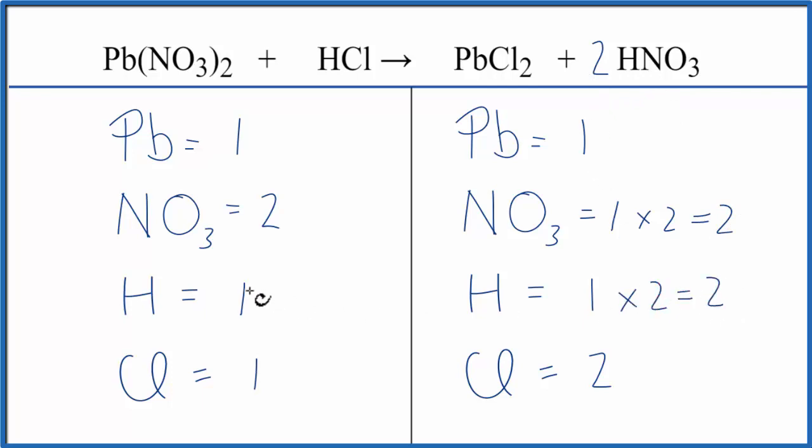So now our hydrogens aren't balanced, and our chlorines aren't balanced. We need two hydrogens here and two chlorines here to balance the equation. If we put a coefficient of two in front of the HCl, we have one hydrogen times the two, that'll give us two of those, those are balanced. One chlorine times the two, that gives us two of those, and those are balanced.